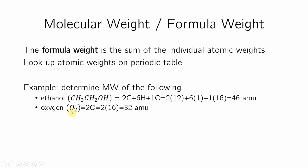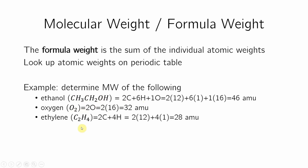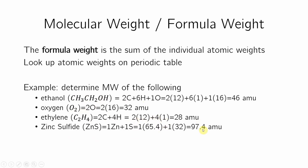Oxygen is O2, so it's two O's — two 16s — that's 32. Ethylene, which is C2H4, is two C's plus four H's. The periodic table tells me C is 12 and H is 1. I add them all up — it's 28.